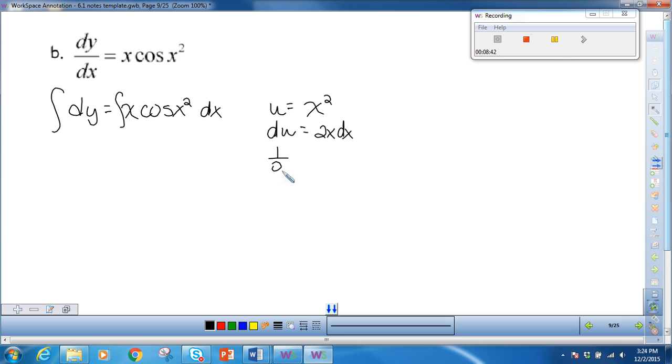So 1 half du is equal to x dx. And now I can substitute that in. So I have 1 half the integral of cosine of u, du. The integral of cosine of u is positive sine u plus c. But once again, u is equal to x squared. So this is 1 half sine x squared plus c. And that's equal to the integral of dy is y.